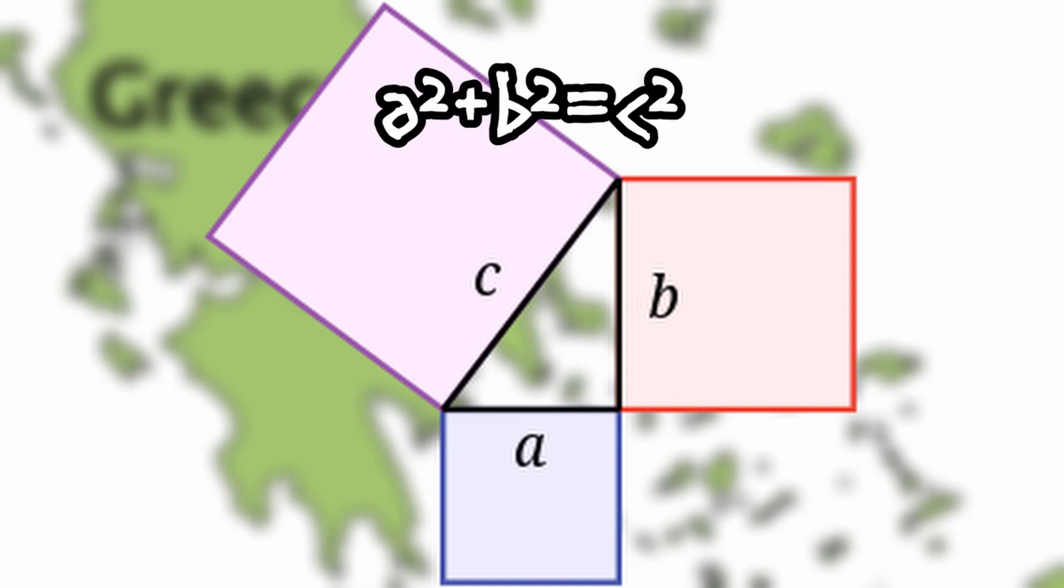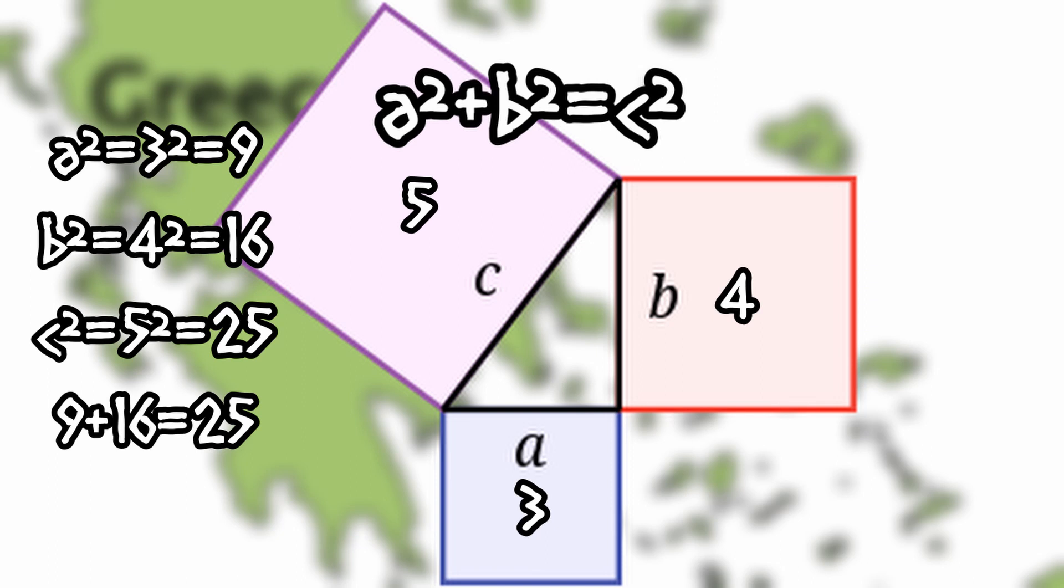So Pythagoras's theorem is a squared plus b squared equals c squared. If you have a right angle triangle where a equals three, b equals four, and c equals five, this is because a squared equals nine, b squared equals sixteen, and c squared equals twenty-five, which is nine plus sixteen. You get that? That was his big thing.